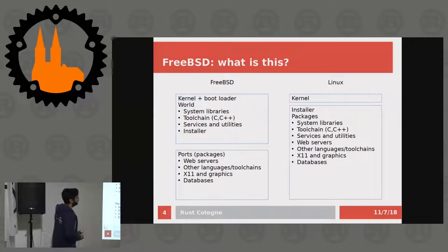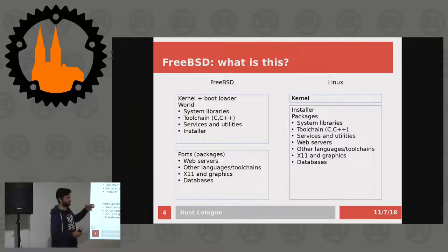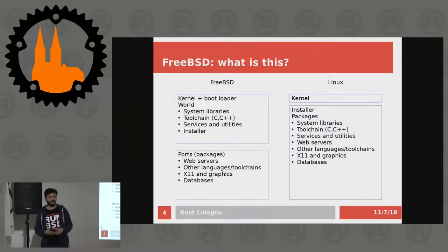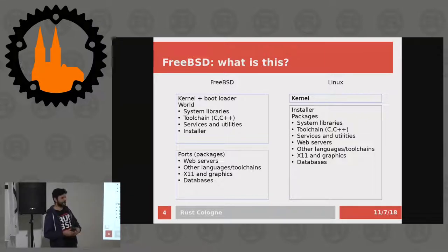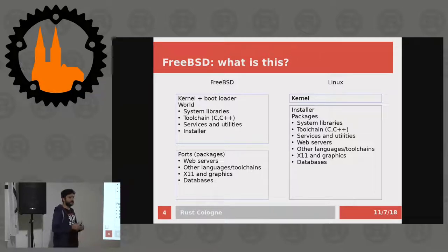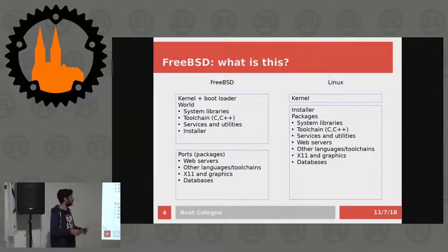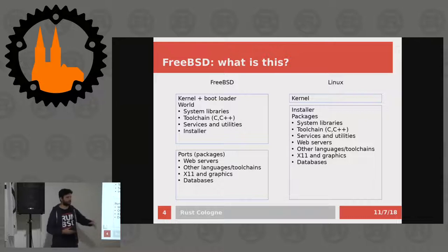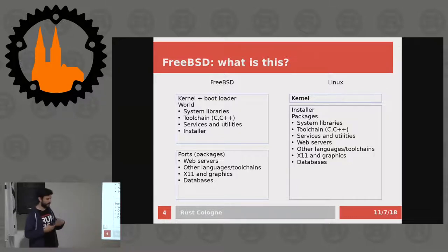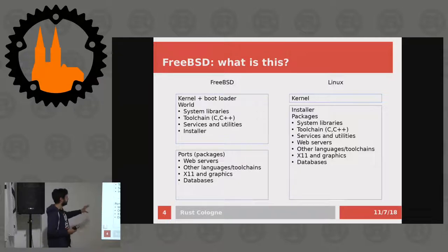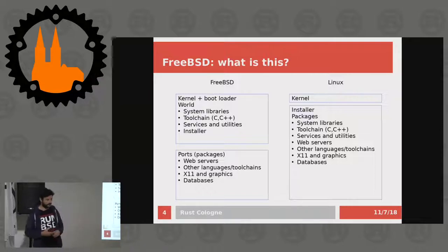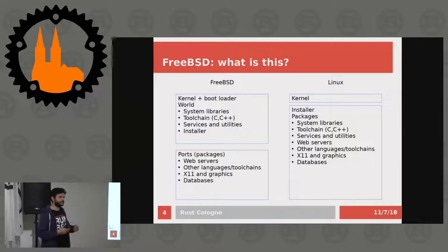The other big difference is how we know Linux. Linux is normally just the kernel, and a distribution is everything else. Every distribution has its own installer and package system — they decide which toolchain to use, how they split packages, whether they make dev versions, and so on. FreeBSD is slightly different: it's not just the kernel — it's the kernel, bootloader, and the codebase. There are system libraries, toolchain, services, and installer. Everything else is packages. Packages are not part of FreeBSD per se, but you have to build them — web servers, languages, toolchains, and so on. You can have multiple compilers installed at the same time, multiple versions of Python, whatever.